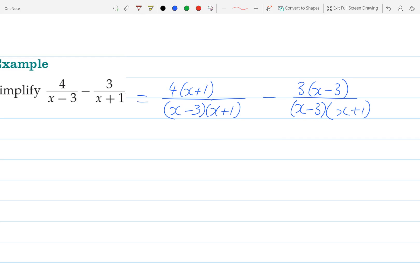Now that the bottom parts of my fractions are the same, I can add the tops. First, I need to expand each of those brackets. I'd have 4x+4 minus 3x, and then I'd have 3 times negative 3, which is negative 9.